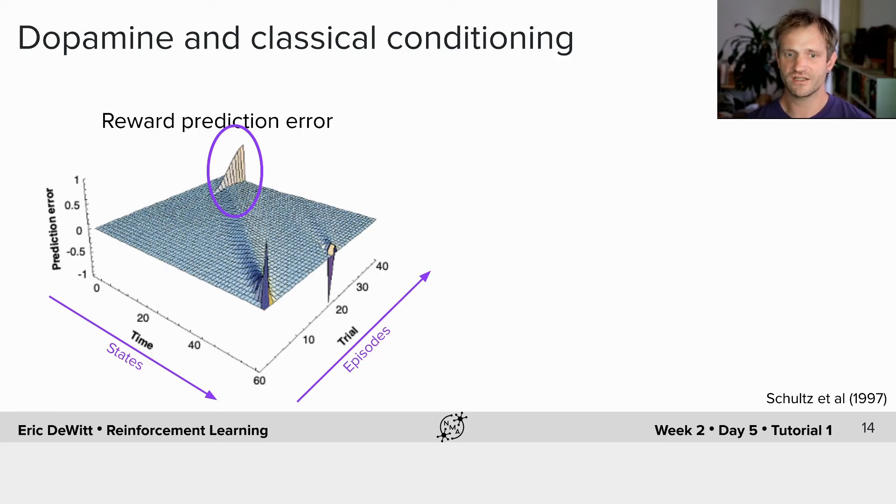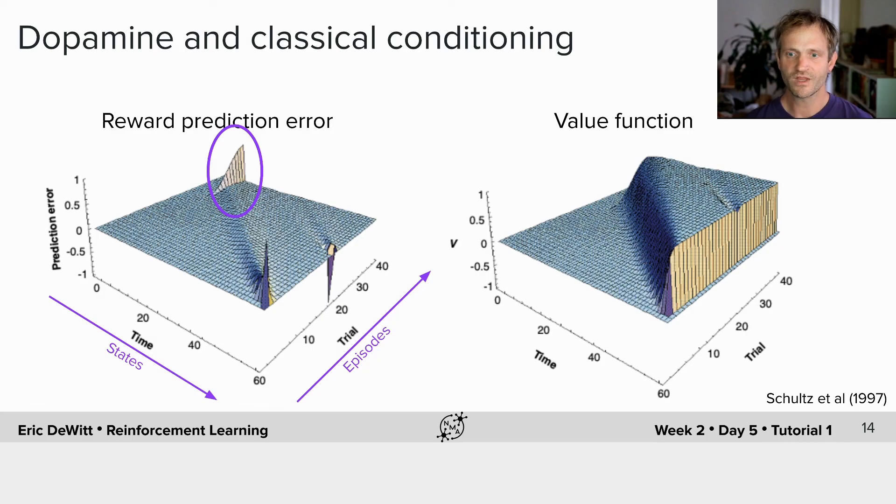Of course, they also indicated in this simulation a negative reward prediction error due to an omission. We can also look at the evolution of the value function over time, and we see that it rises up and indicates, as you go through more episodes, that the value is being expected further and further back in time.